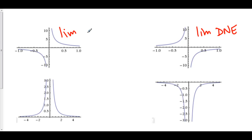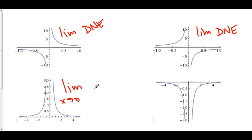Let's take a look at case number three. Here, the limit from the left-hand side approaches infinity, and the limit from the right-hand side also approaches infinity. Here, the limit as x approaches zero of f of x is equal to infinity, because both sides are going off to infinity.